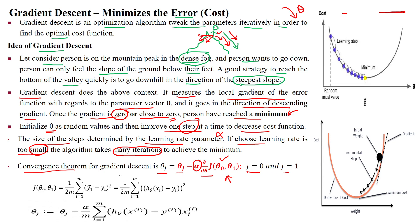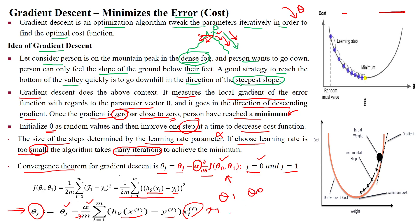Here j equals 0 and j equals 1, because we are taking two parameters: theta 0 and theta 1. For mean squared error, the formula is 1 divided by 2m, summation i equals 1 to m of the predicted value minus actual value, whole squared. The common generalized equation is: theta j equals theta j minus alpha divided by the number of samples m, times the summation of predicted value minus actual value, multiplied by the data point.